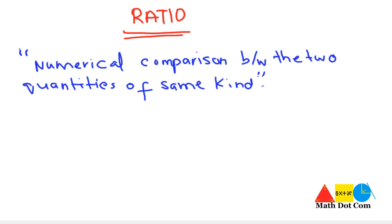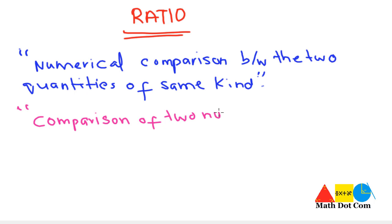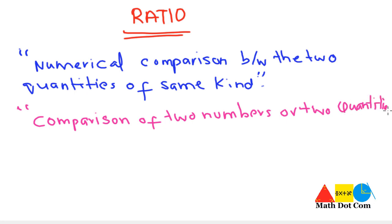Another definition is the comparison of two numbers or two quantities. This is the shortest and handiest definition — comparison of two numbers or two quantities. It does not specify any specific condition as we discussed in the above definition.